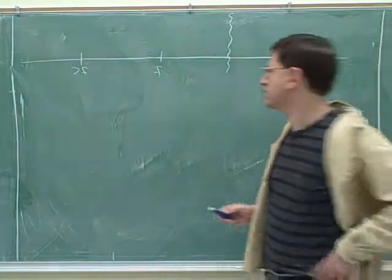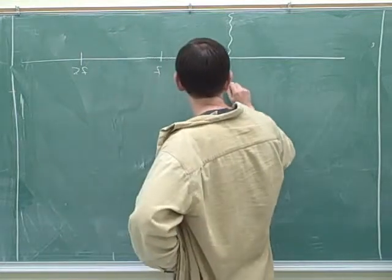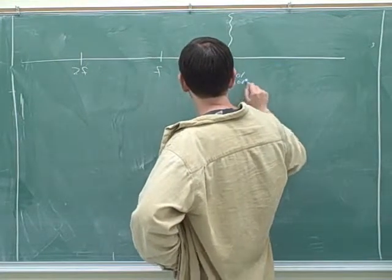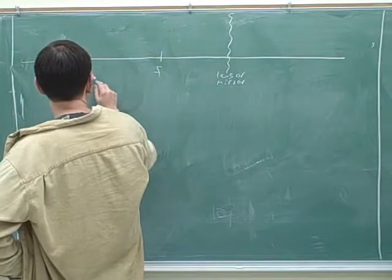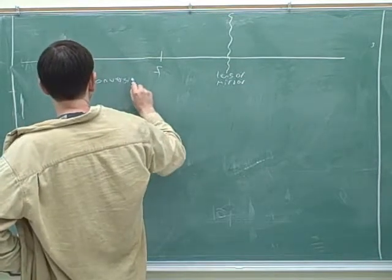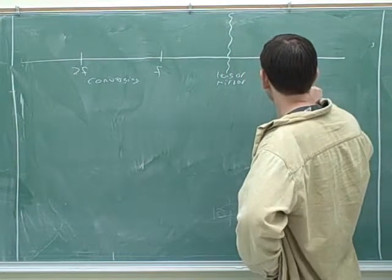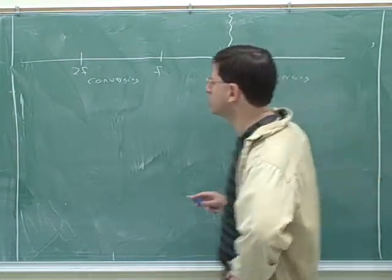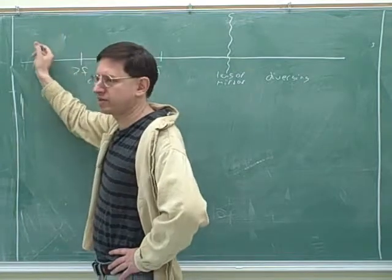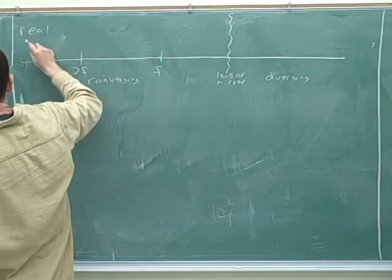What type of device would we be thinking about here? This is the lens — converging. Remember, this works for either a lens or a mirror. So on this side we treat it as a converging device, and this side we treat it as diverging. So if we put the object outside twice the focal length, what are its characteristics? It would be real, upright, and the same size.